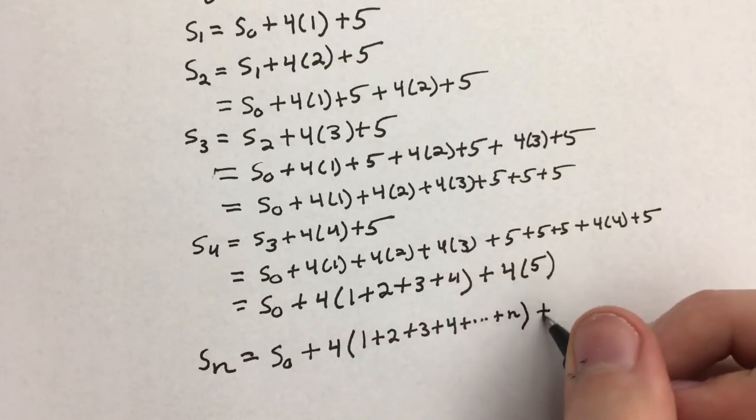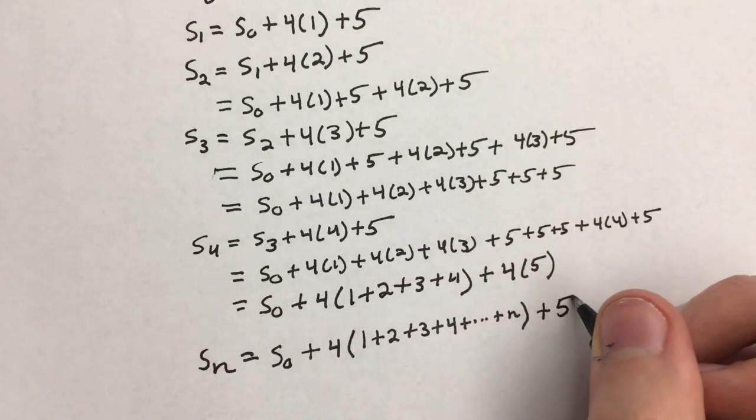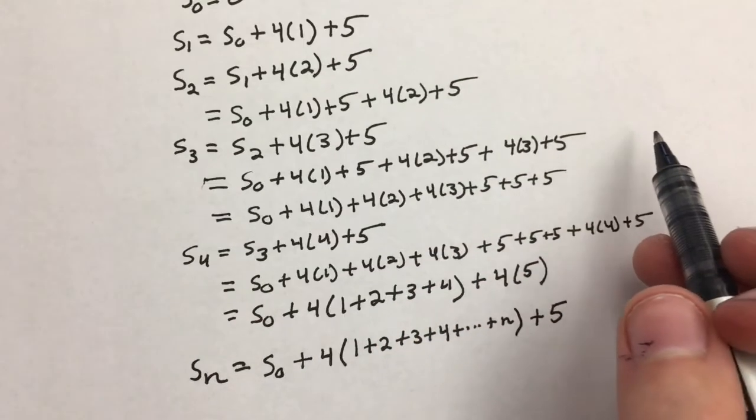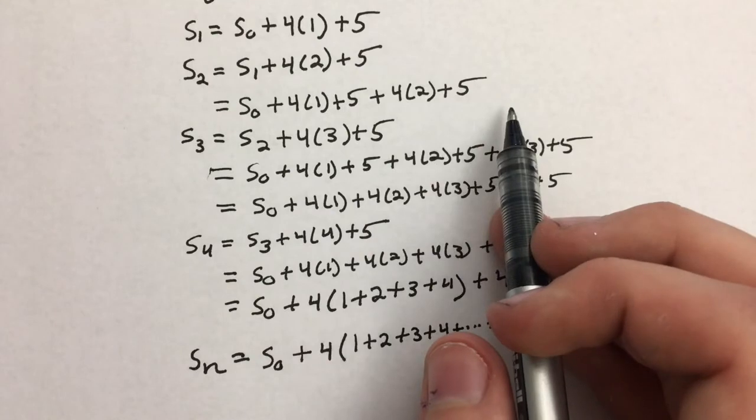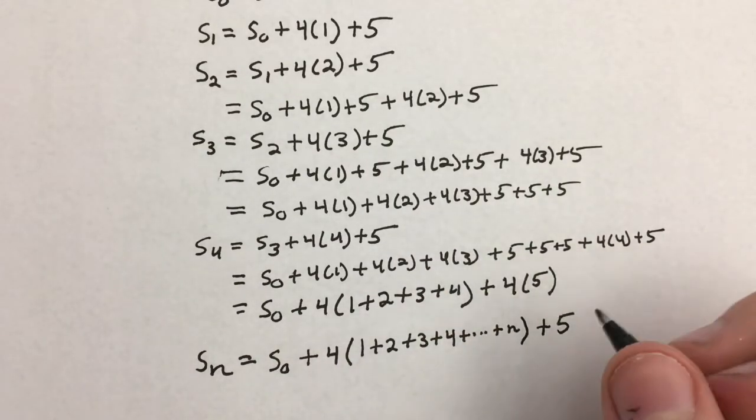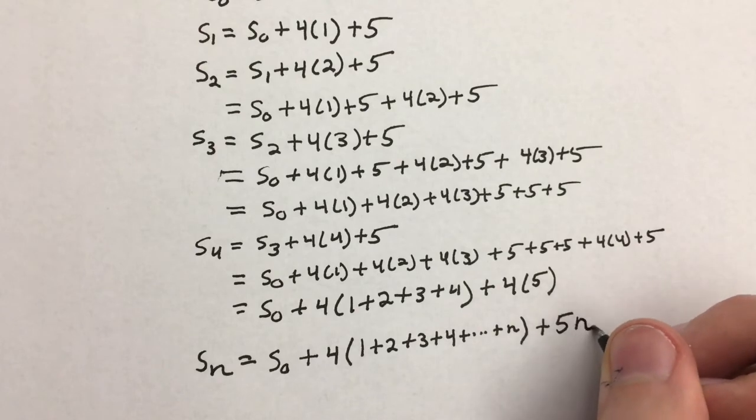And then here we've always had a 5. It's always been a sequence of 5's, but the number of 5's we've had keeps going up by 1. Here we have 2 fives, here we have 3 fives, here we have 4 fives. So we're going to make this 5 times n, because we want to have one more 5 each term.